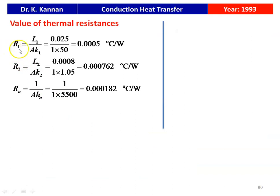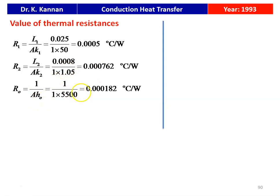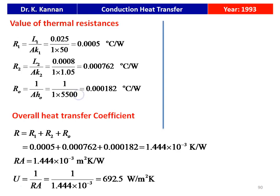Calculating resistances with area = 1 m². Resistance due to cast iron: R1 = L1/(A·K1) = 0.025/(1×50) = 0.0005°C/W. Resistance due to enamel: R2 = L2/(A·K2) = 0.0008/(1×1.05) = 0.000762°C/W. Convection resistance: Ro = 1/(A·Ho) = 1/(1×5500) = 0.000182°C/W. Total resistance R = R1+R2+R3 = 1.004×10⁻³ K/W. Area-weighted resistance RA = 1.004×10⁻³ m²·K/W.